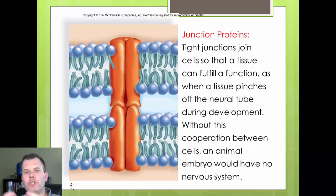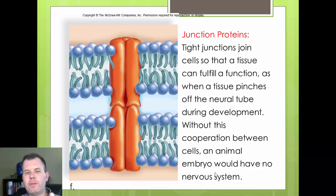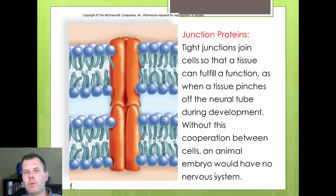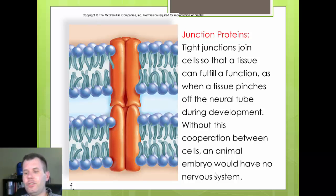Tight junction or junction proteins act like spacers - like the grout lines between tile floors that keep tiles evenly spaced. They allow cells to be nicely and evenly spaced around each other, and also help with communication. Note: you don't need to memorize all these specific protein types for the test - just understand that proteins have many different functions within the cell.